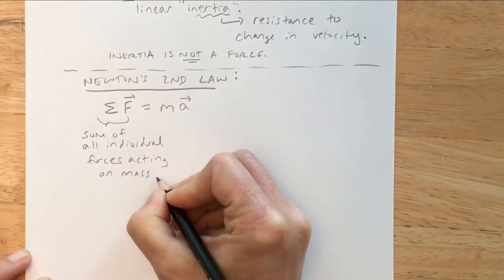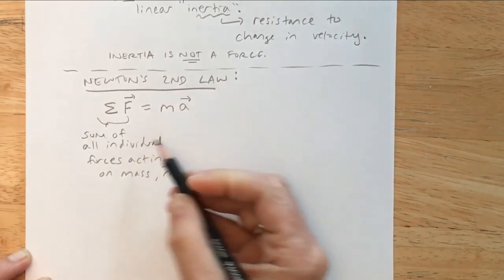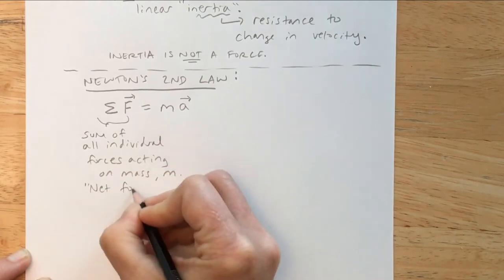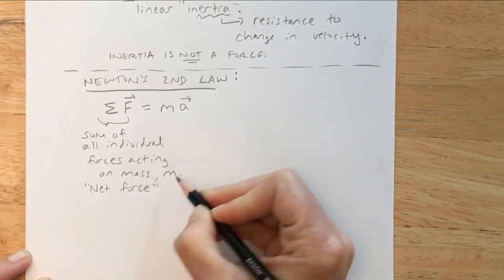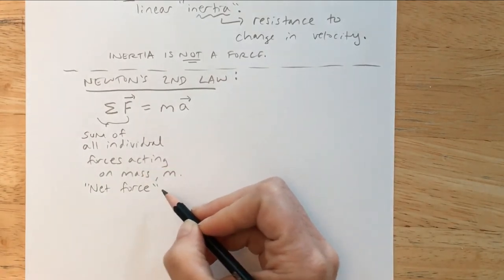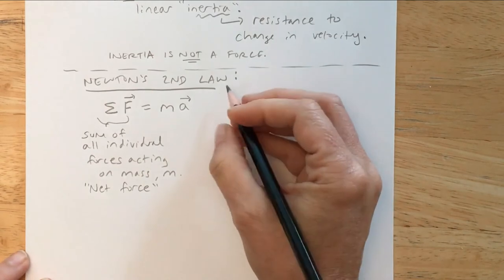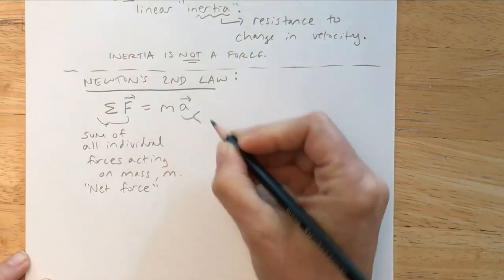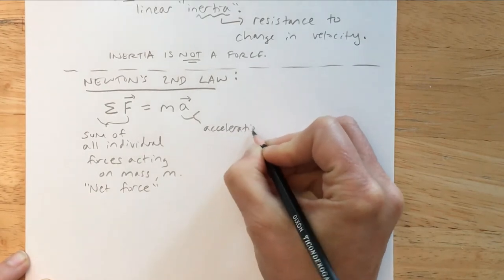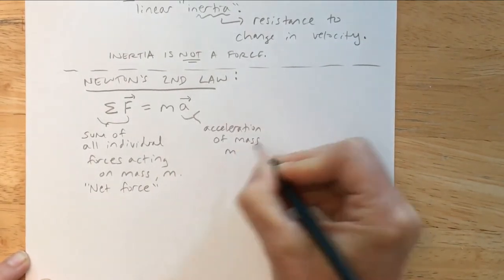The left-hand side of Newton's second law is the sum of all individual forces acting on a mass m. This is what we call the net force — specifically the sum of all individual forces acting on that mass, only on that mass. And that equals the mass of the object times the acceleration of that object.